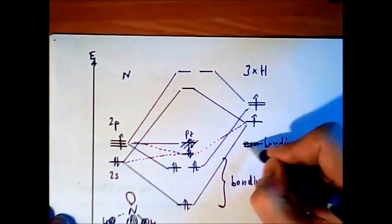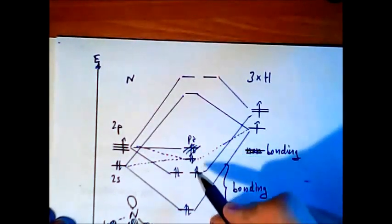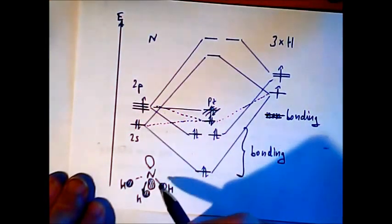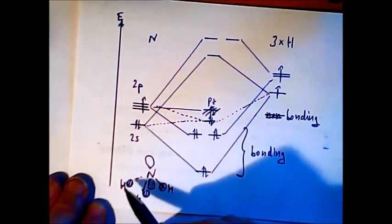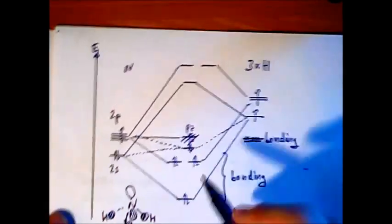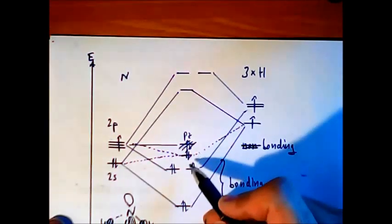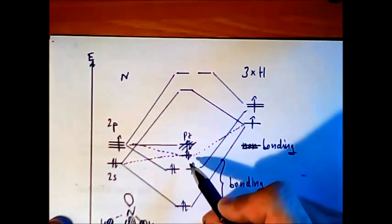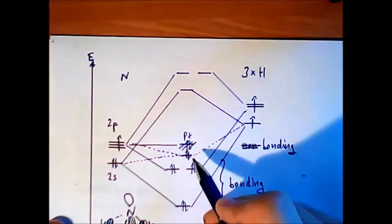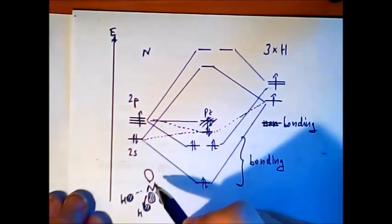So this pz we can say is also bonding, not true, but only a little bit. As you see in the picture the overlap between nitrogen pz and the hydrogen is small but it is there. So actually this orbital with the two electrons is bonding but has the character of a lone pair.